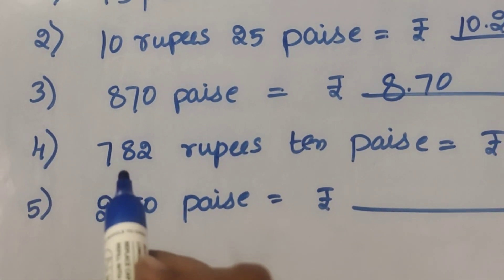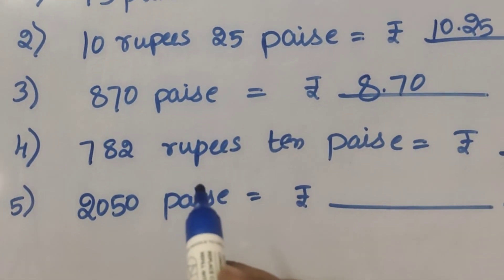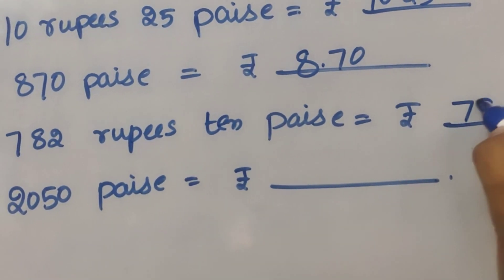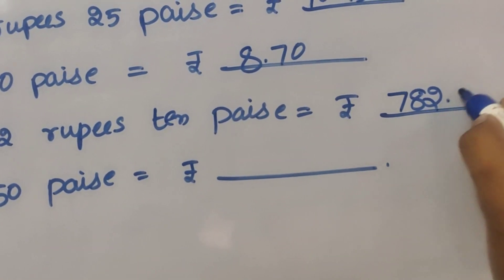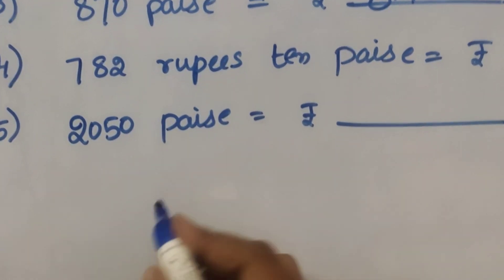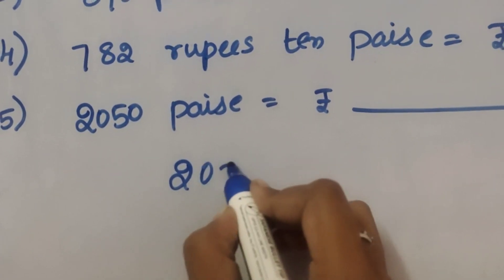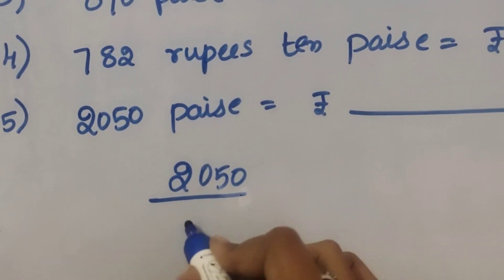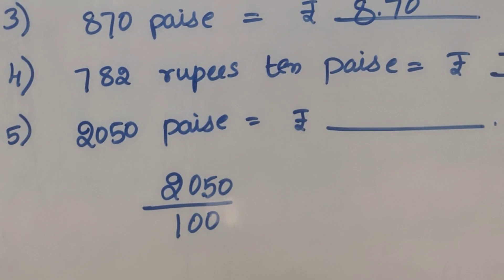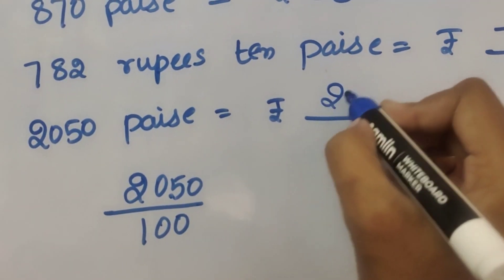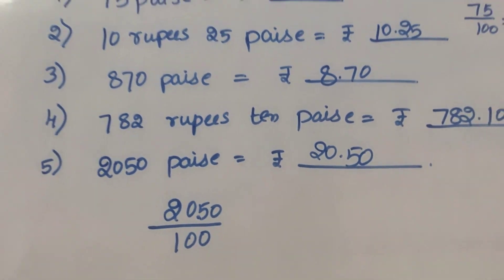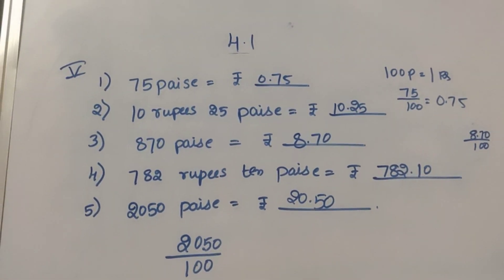Next: seven hundred eighty-two rupees ten paise = 782.10 rupees. Last one: two thousand fifty paise = 2050 divided by 100 = twenty rupees fifty paise = 20.50 rupees.